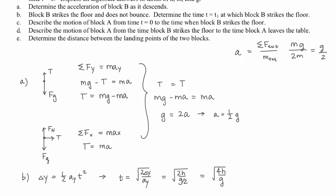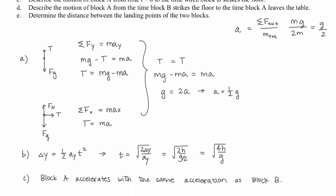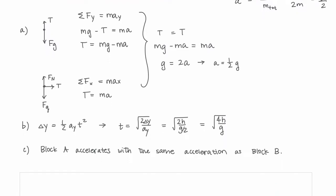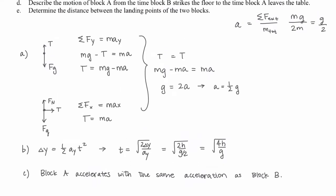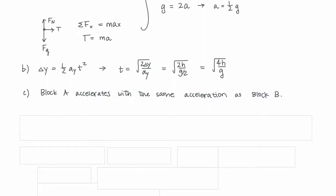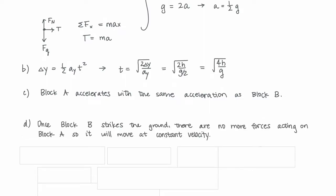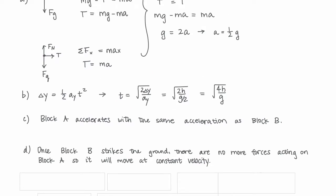Part D: Describe the motion of block A from when block B strikes the floor to when block A leaves the table. Once block B strikes the ground, there are no more forces acting on block A, so it moves at constant velocity. This comes from Newton's first law: in the absence of forces, objects move at constant velocity.